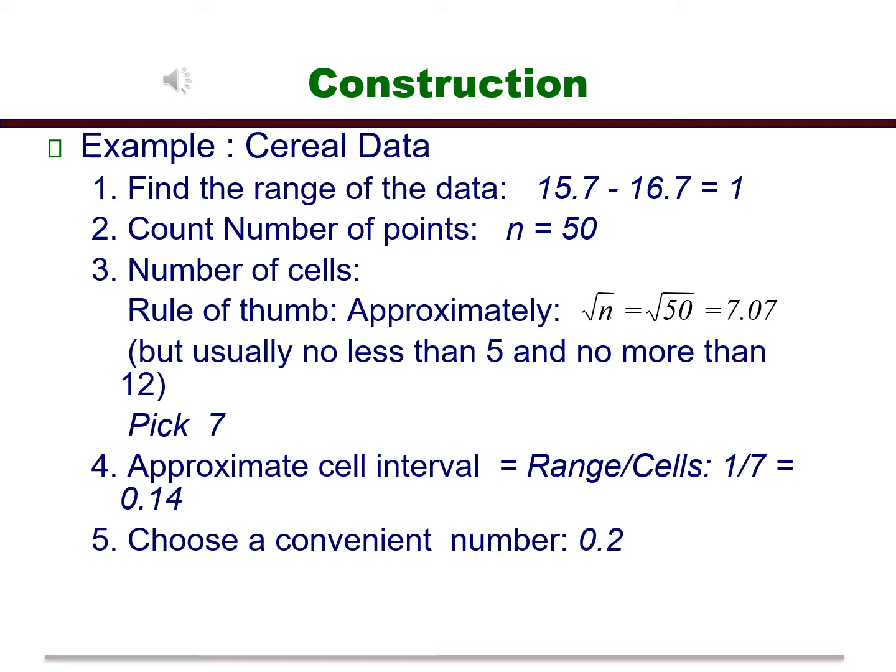Our example is the cereal box weight data. First thing we want to do is find the range of the data. The maximum, which is 16.7, minus the minimum, which is 15.7, gives us a range of 1. The number of data points, or n, is equal to 50. Generally, to get the number of cells or bins, we take the square root of n or the square root of 50, which is about 7.